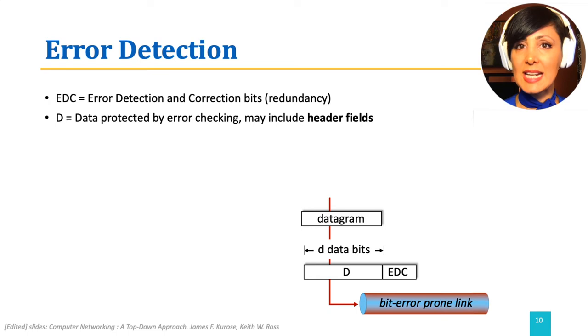At the sending side, EDC is calculated based on a link layer mechanism implemented in the protocol and added to the frame. At the receiving side, d is double-checked with the same mechanism with the EDC bits of the packet. Note that bit errors might also happen on the EDC bits.